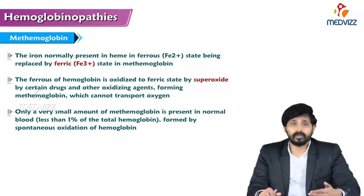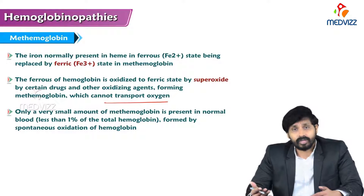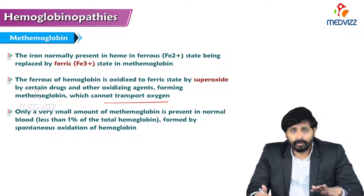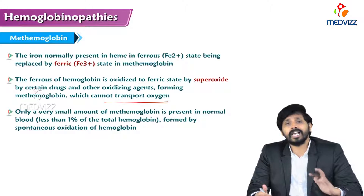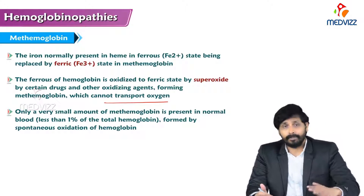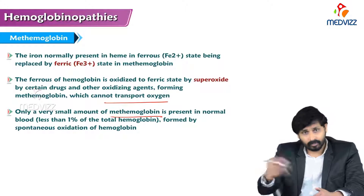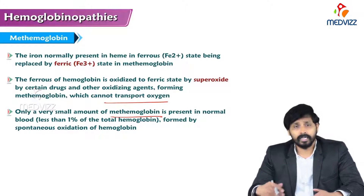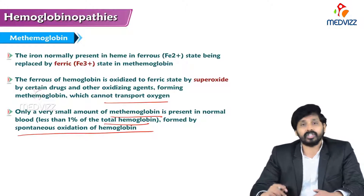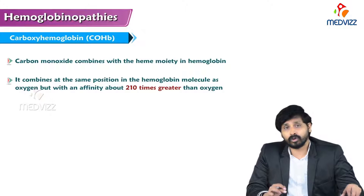Methemoglobin is functionally inactive — it loses its oxygen-carrying capacity. Only a very small amount of methemoglobin, less than one percent of total hemoglobin, is present normally in the blood, formed by spontaneous oxidation of hemoglobin.